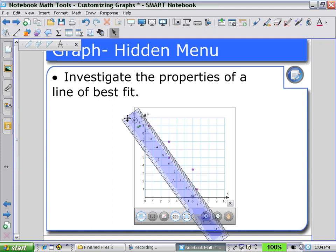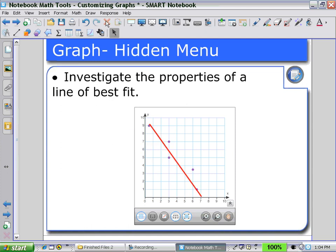And then using a pen, I can now draw my line of best fit along that straight edge, delete my ruler, and then check my accuracy using the line of best fit icon.